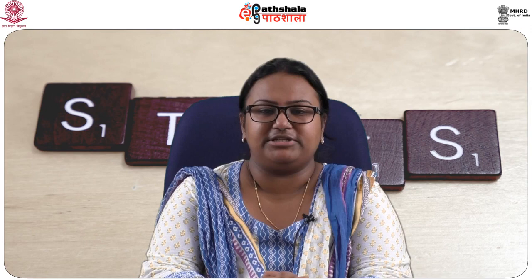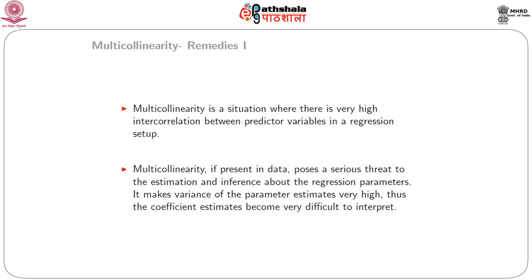What we do is try to detect multicollinearity and, once we are sure of its existence, remedy the situation and then fit a linear model to our data set. In this module we will look at different methods to remedy the situation where multicollinearity is present in the data. Multicollinearity is a situation where there is very high inter-correlation between predictor variables in a regression setup. If present in data, it poses a serious threat to the estimation and inference about the regression parameters — it makes the variances of the parameters very high.